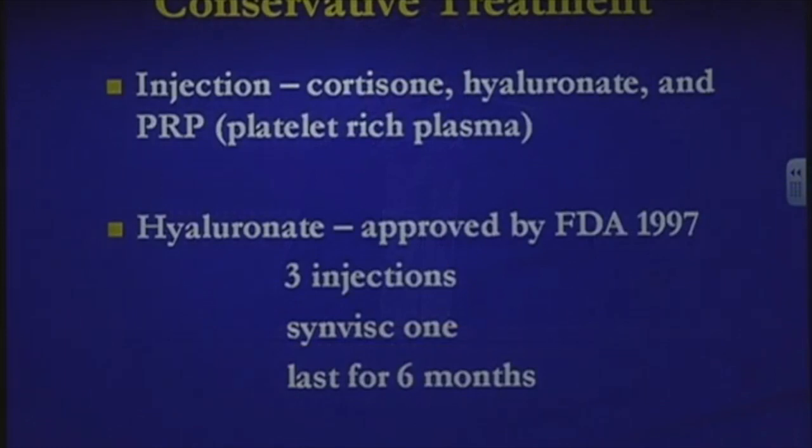Another injection you may hear about is platelet-rich plasma (PRP). We take blood from you, spin it in a centrifuge, and withdraw the platelets, which have growth factors that have been shown to help some patients with osteoarthritis. The problem is this is very new technology, we don't fully understand how it works, and most insurance companies do not cover it.